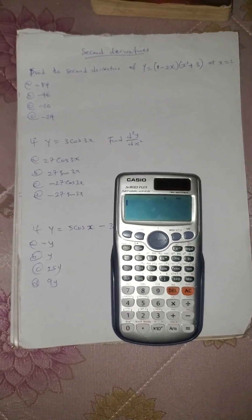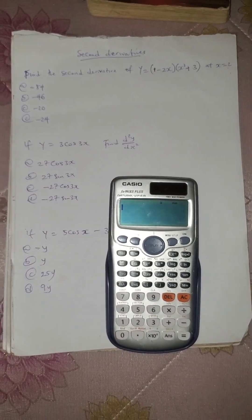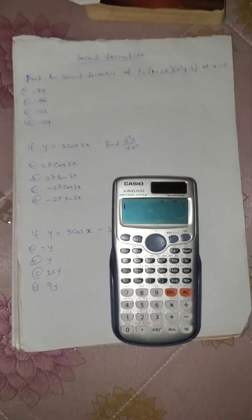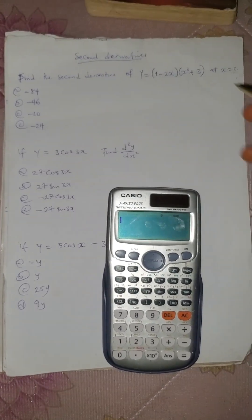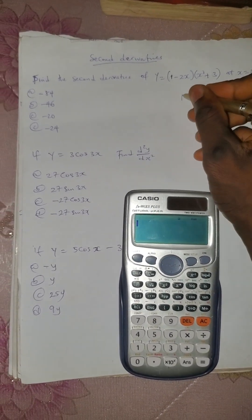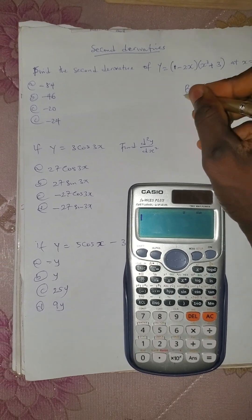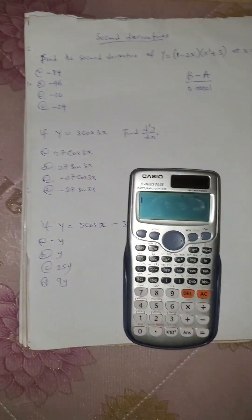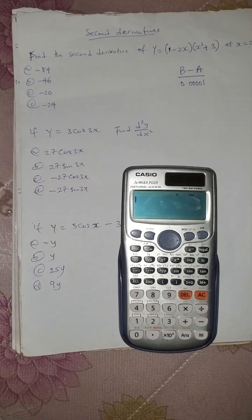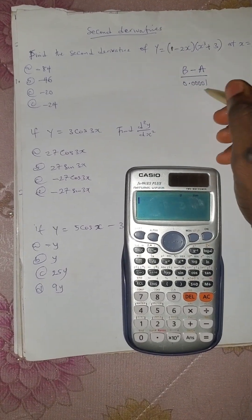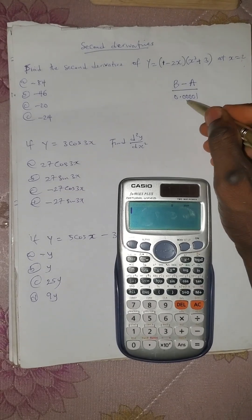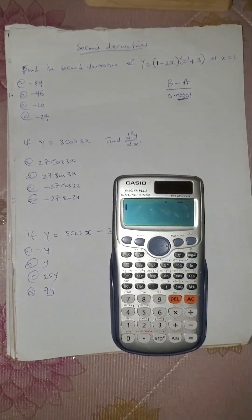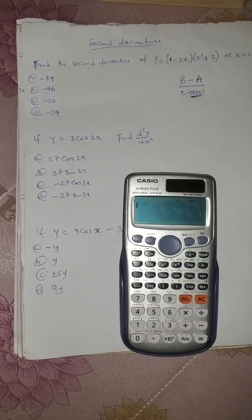Welcome to another class on second derivative. This is how you do second derivative, or when they ask you to differentiate twice. You are going to follow the formula that says b minus a over 0.00001. This 0.00001 is a constant — observe that this is 4 zeros and the 1 makes it 5 digits total.